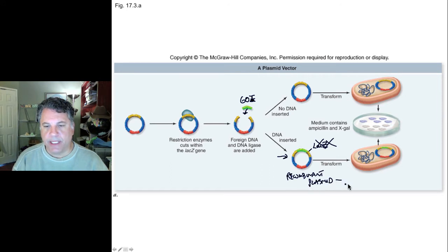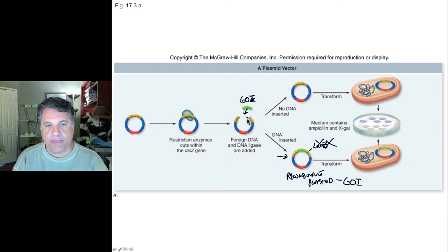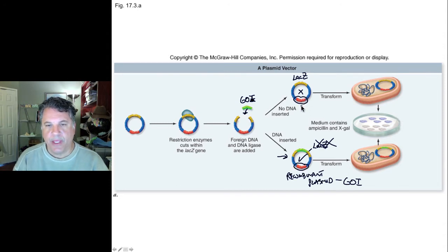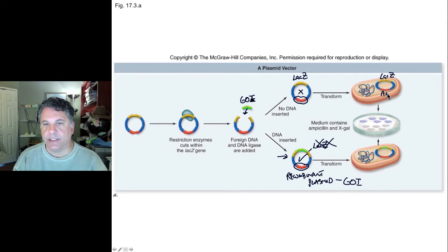After restriction cutting and ligation, we have a population of plasmids in our microfuge tube. Some of those plasmids would have our gene of interest inserted, but most would not — they would have an intact LACZ gene. Note that both types of plasmids have intact ampicillin resistance genes. Our population of plasmids can then be used to transform bacteria, and most bacteria would be transformed by a plasmid with an intact LACZ gene and the ampicillin resistance gene.